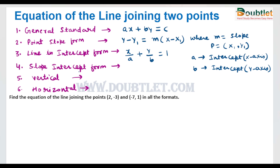Now we will deal with the slope-intercept form. The slope-intercept form of a line is y equals mx plus c, where m is the slope and c is the y-intercept. When the slope m and the y-intercept c are given, we can directly write the slope-intercept form of the line.